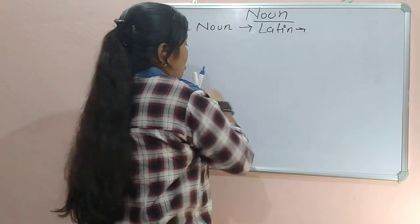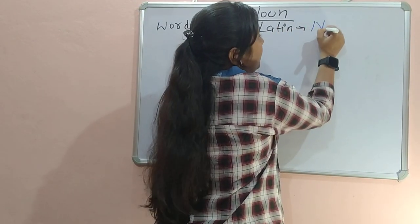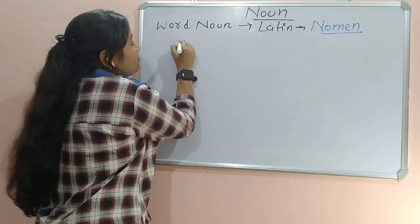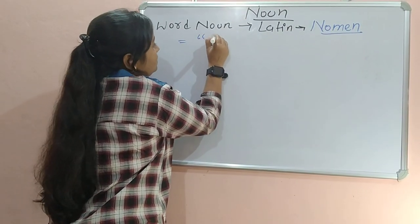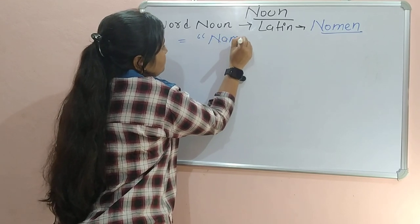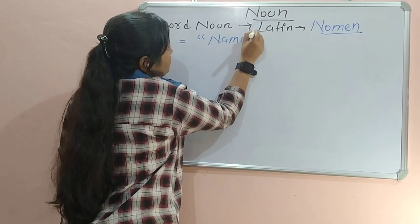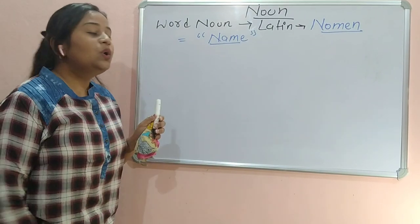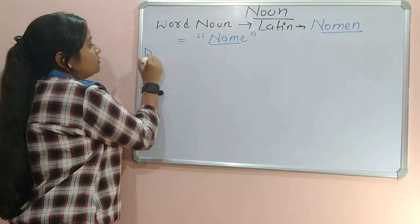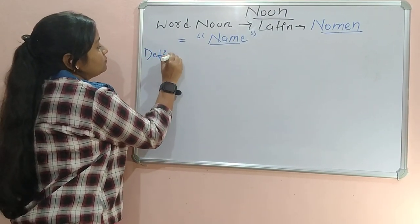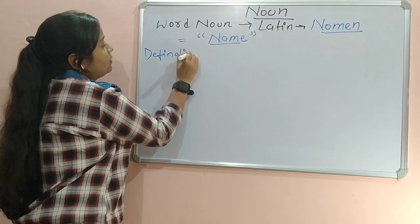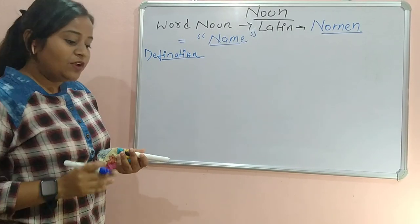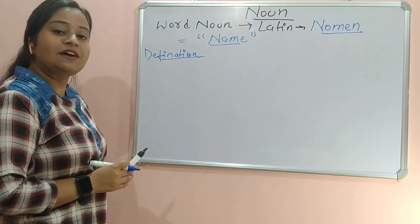Latin 'nomen' — N-O-M-E-N — which means 'name'. So this will simplify our definition. The Latin word nomen means name. So let's come to the definition, which we all know — we have been learning it since childhood.